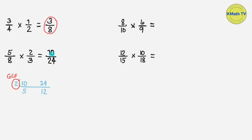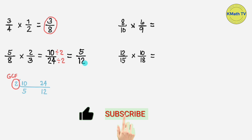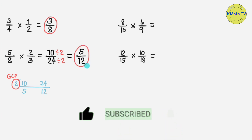Now let's divide the numerator and the denominator by their GCF 2 to reduce the fraction to lowest term. 10 divided by 2 equals 5. 24 divided by 2 equals 12. The answer is 5 twelfths.